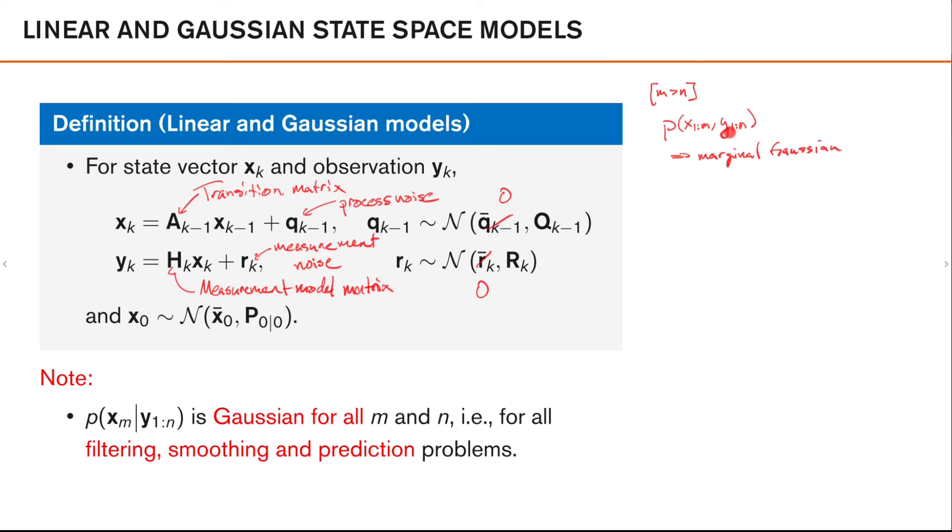Then condition on y_1 to y_n, it is still a Gaussian distribution, and this doesn't change it either. So it's conditional Gaussian.